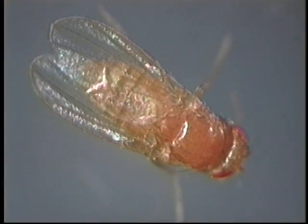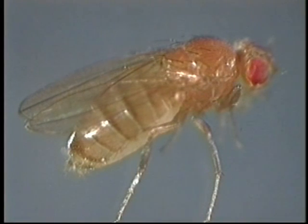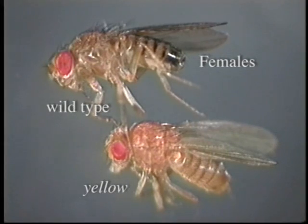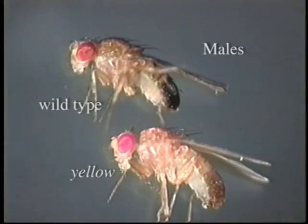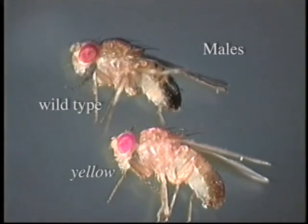This fly carries the yellow mutation. The protein encoded by the yellow gene controls deposition of the black pigment melanin. A fly with a mutation in this gene lacks melanin in its cuticle and appears yellow.